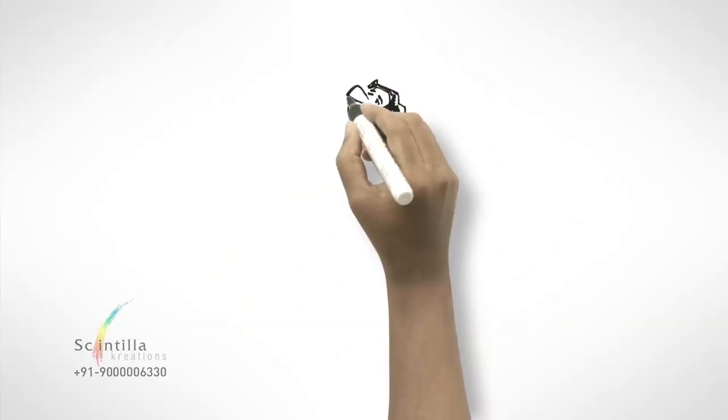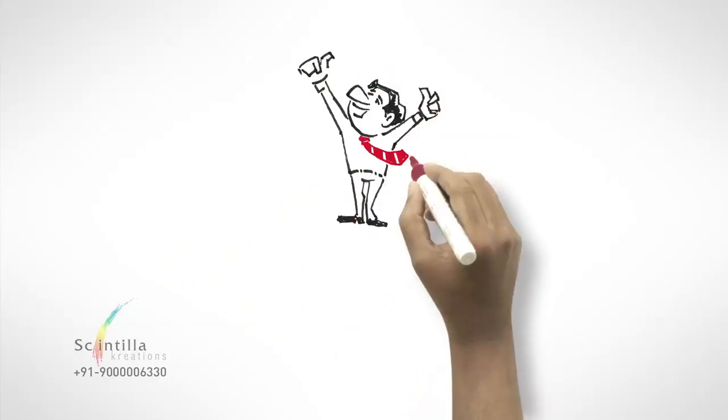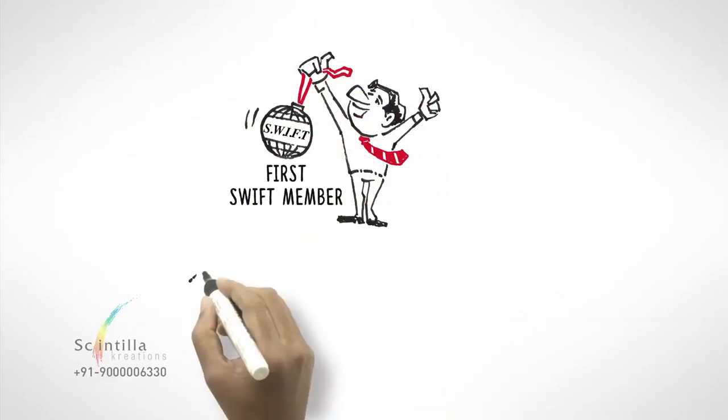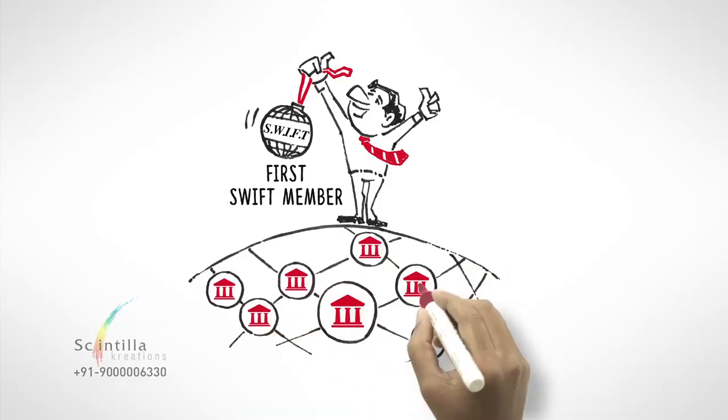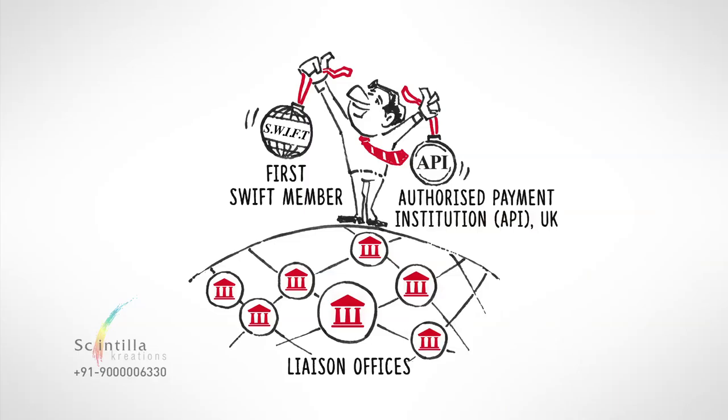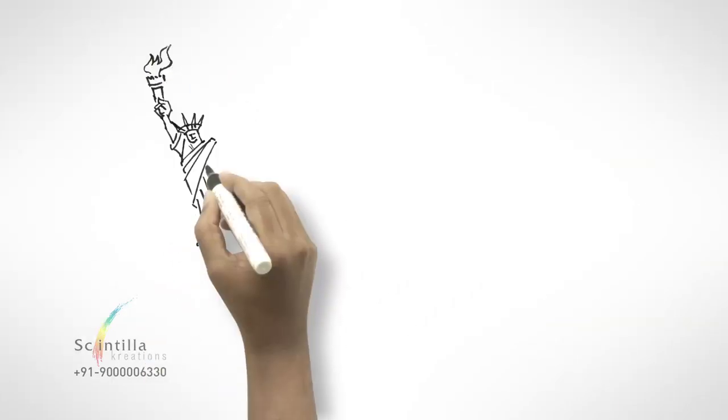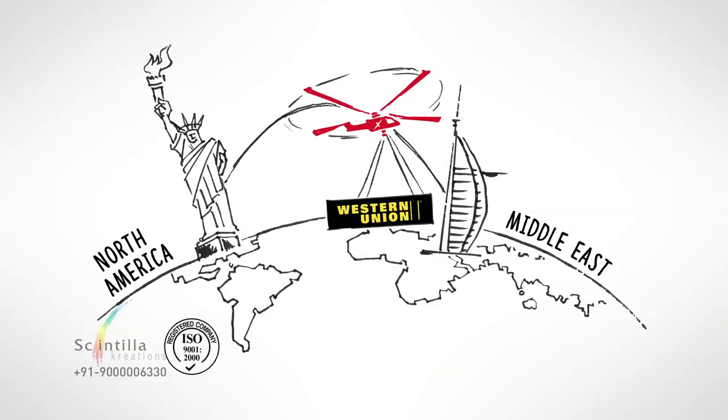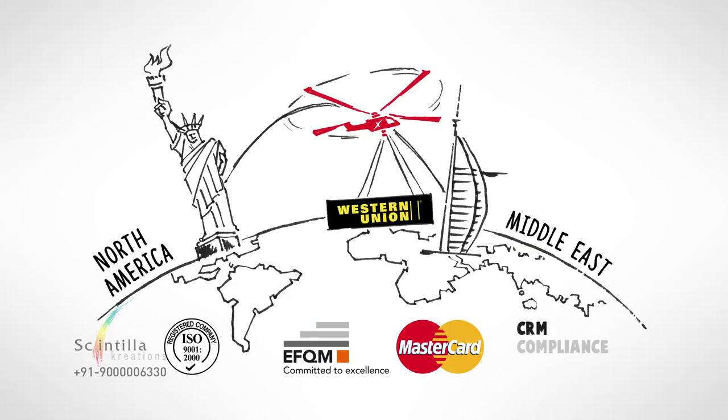As a remittance brand, UAE Exchange was the first to get SWIFT membership which till then was offered only to banks. UAE Exchange opened liaison offices and became an authorized payment institution in the UK, was the first to bring Western Union to the Middle East, get an ISO 9001-2000 certification, adopt EFQM, have a principal membership with Mastercard, launch centralized process control and invest in enhanced technological experience.